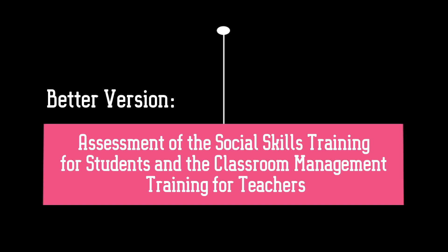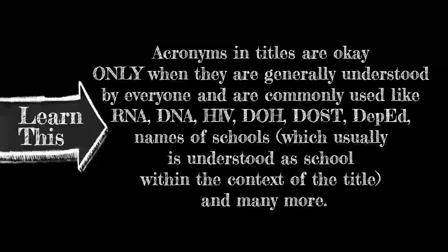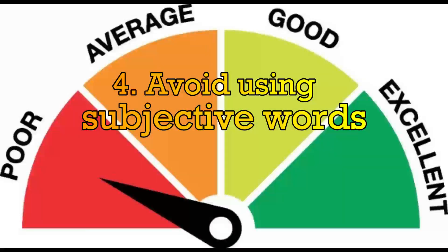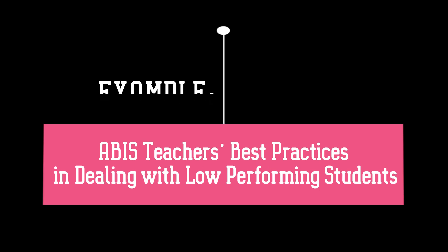Therefore, we can use acronyms in titles only when they are generally understood by everyone, such as RNA, DNA, HIV, DOH, DOST, DepEd, or names of schools which are understood as school names within the context of the title. The next thing to avoid is subjective or biased terms. For example: 'ABISS teachers' best practices in dealing with low-performing students.' The word 'low' is subjective and too personal — it seems we have already judged the school, connoting a negative impression which we must avoid in writing a title.